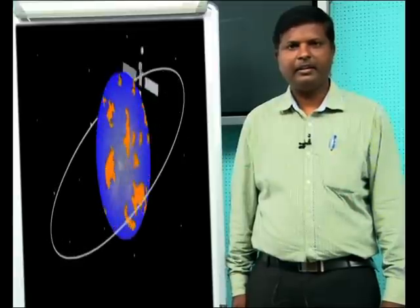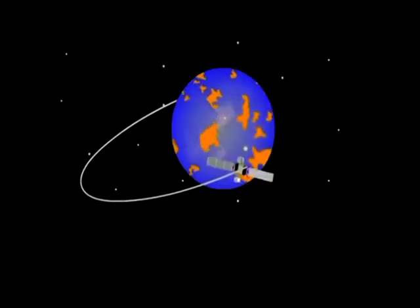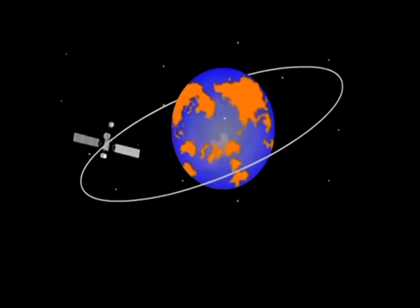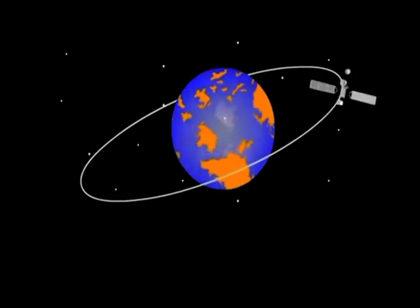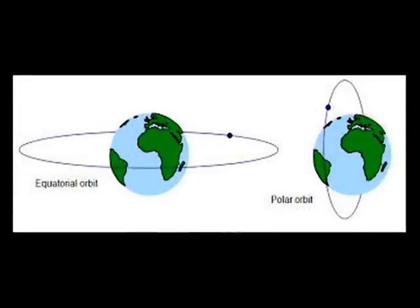What is a satellite? A satellite is an artificial object which is made to rotate around the earth in order to collect information and power communication. The path in which a satellite revolves around the earth is called its orbit. Depending on the type of rotation of the satellite, orbits are classified into equatorial orbit and polar orbit.